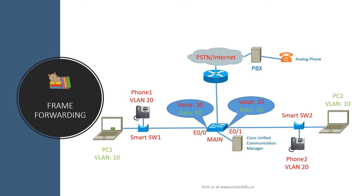Let's analyze the frame forwarding process in this network diagram, assuming the MAC address tables of all switches are fully populated. First, we look at the case when PC1 forwards a frame to PC2. The frame is created in PC1 and forwarded to smart switch 1. Smart switch 1 understands the frame belongs to the data VLAN and forwards it to port E0/0 of the main switch. The main switch reads the frame, knows it belongs to VLAN 10 and its destination is PC2, checks its MAC address table, and forwards the frame to smart switch 2 via port E0/1. Smart switch 2 sees the frame arrives without a tag and forwards it to PC2, completing the process.